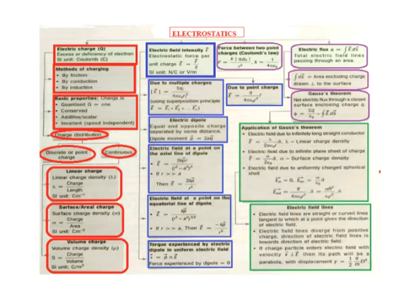Applications of Gauss's theorem: Electric field due to an infinitely long straight conductor — E vector equals lambda divided by 2 pi epsilon naught r, times the unit normal vector n-hat, where lambda is the linear charge density. Electric field due to an infinite plane sheet of charge — E vector equals sigma divided by 2 epsilon naught times n-hat, where sigma is the surface charge density. Electric field due to a uniformly charged spherical shell: inside E is zero; on the surface E vector equals sigma divided by epsilon naught times r-hat; outside E vector equals Q divided by 4 pi epsilon naught r squared times n-hat, which also equals sigma R squared divided by epsilon naught r squared times n-hat.